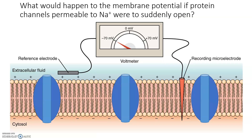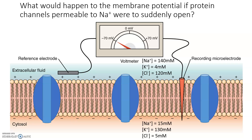Let's take a look at an example. Here we see a neuron membrane at rest, meaning it has negative 70 millivolts for its membrane potential. I've added the concentration of all the ions on the inside and outside of the cell. So what do you think would happen to the membrane potential if protein channels permeable to sodium ions were to suddenly open? Would it increase, decrease, or stay the same? Think about which direction the sodium ions will move, and keep track of the charges.